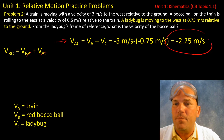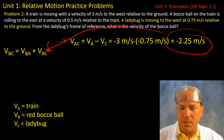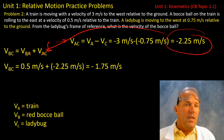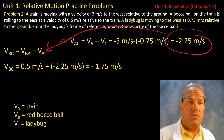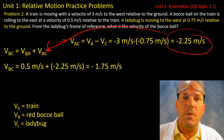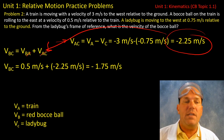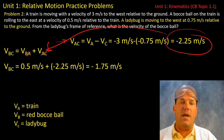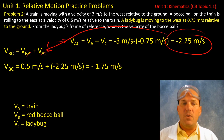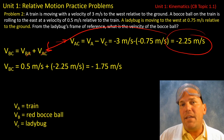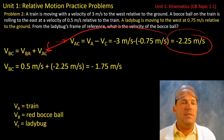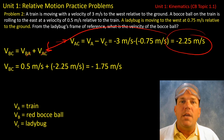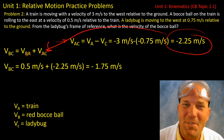Now I can use that number to solve the main equation. Plugging in: 0.5 meters per second is the velocity of the bocce ball relative to the train (V subscript BA), and I'm adding the velocity of the train relative to the ladybug, which we just found to be negative 2.25 meters per second. Adding those two together, I get negative 1.75 meters per second — meaning from the ladybug's frame of reference, the bocce ball is moving to the west at 1.75 meters per second.